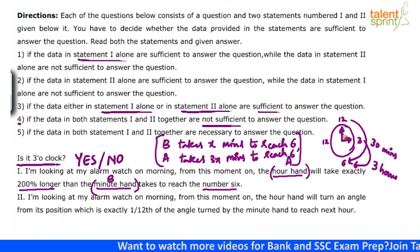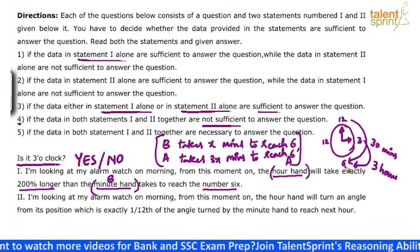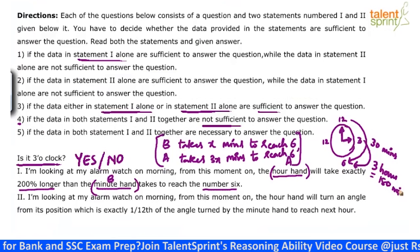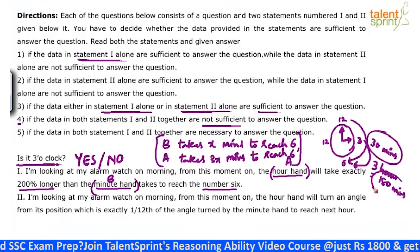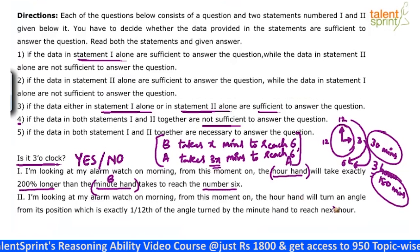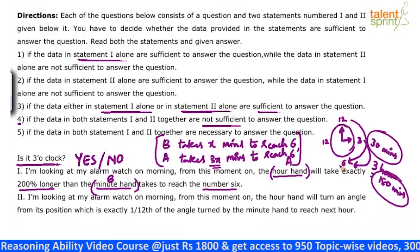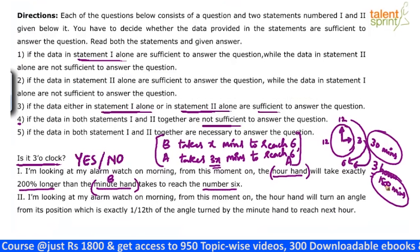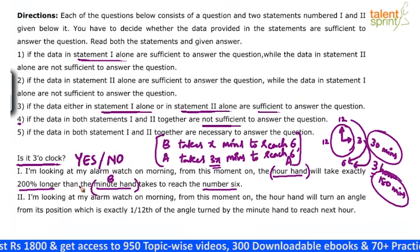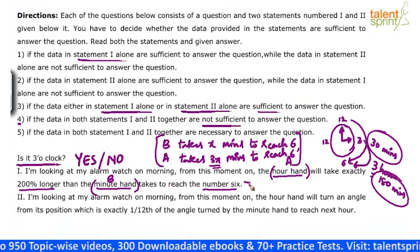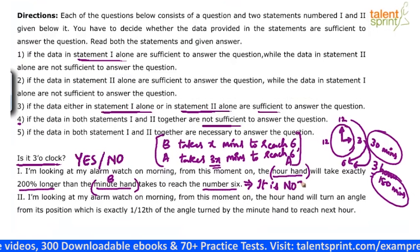But we know that if it was actually 3 o'clock, the minute hand takes 30 minutes and the hour hand takes 3 hours — that is 180 minutes — to reach number 6. Is that a 3x relationship? No. 30 minutes and 180 minutes is 6x, not 3x. But what the statement says is 3x. So clearly, it is not 3 o'clock. We assumed 3 o'clock; the scenario gives us 6x, but the data says 3x. So it is not 3 o'clock.